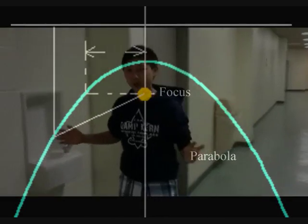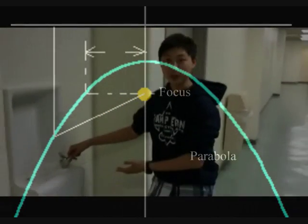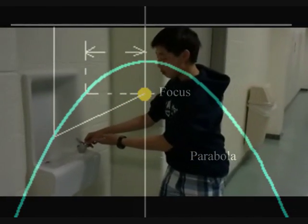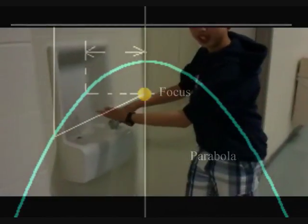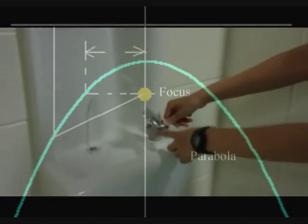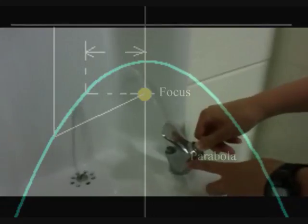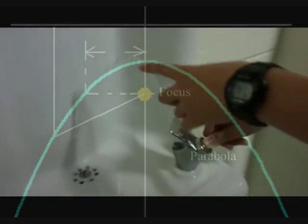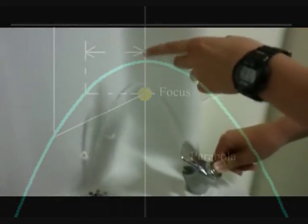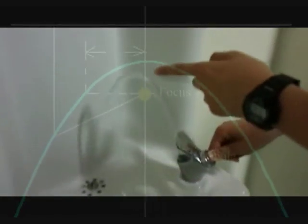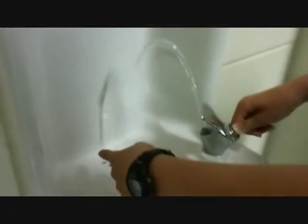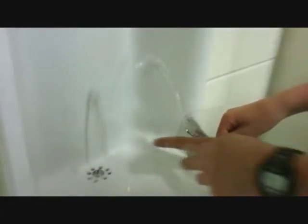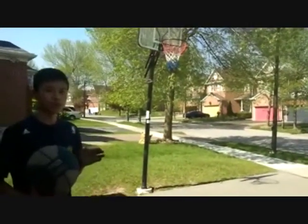For example, we see this water fountain and the stream of water is a parabola. Over here we have the x-axis and then as it curves up there is the axis of symmetry or the maximum point. Finally it starts curving down and intercepts the x-axis one more time.